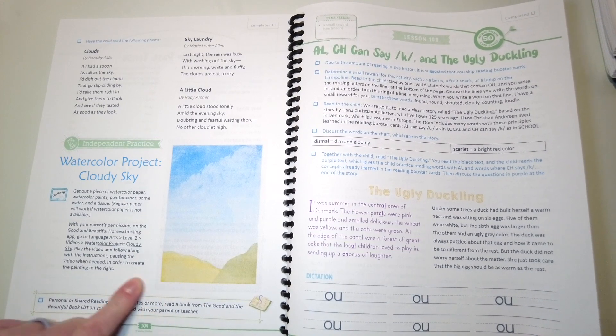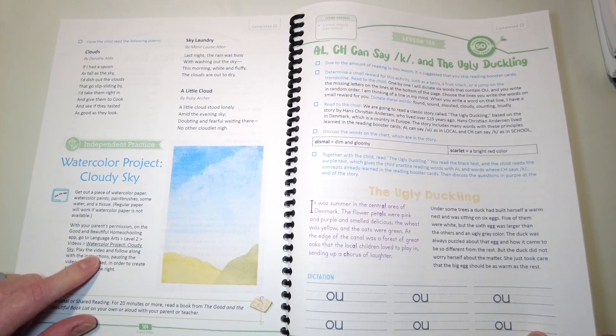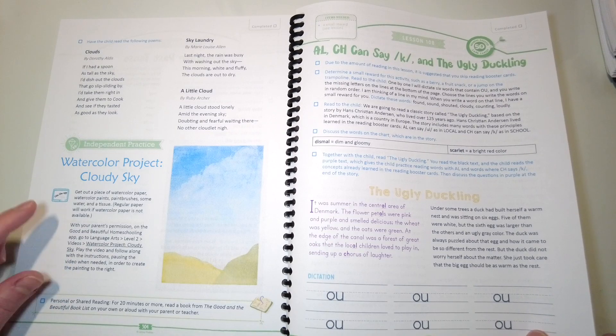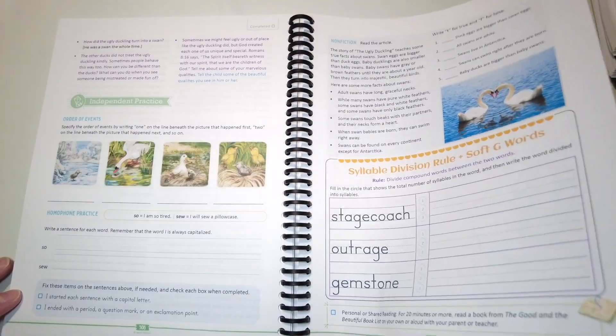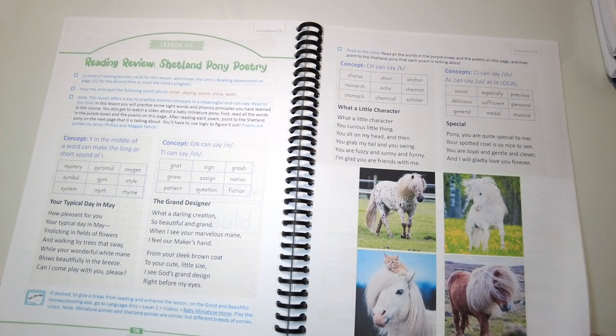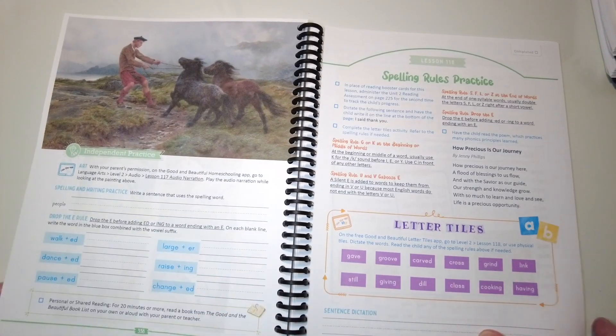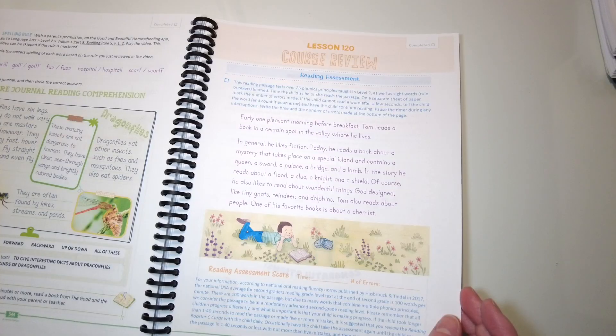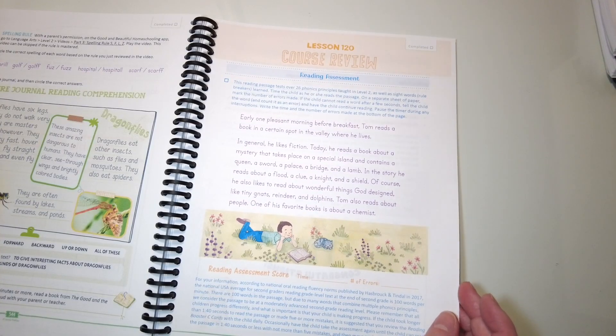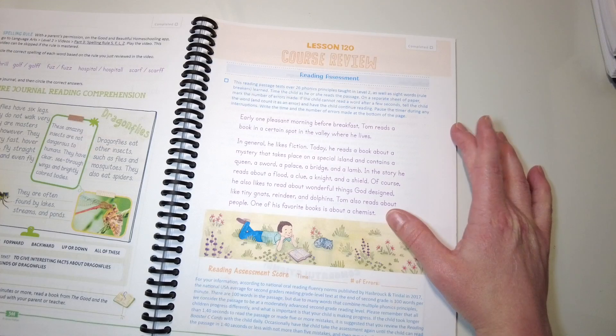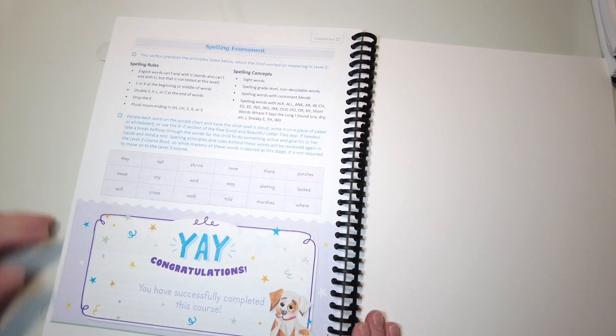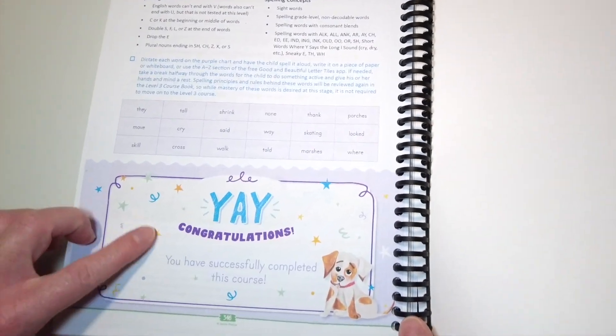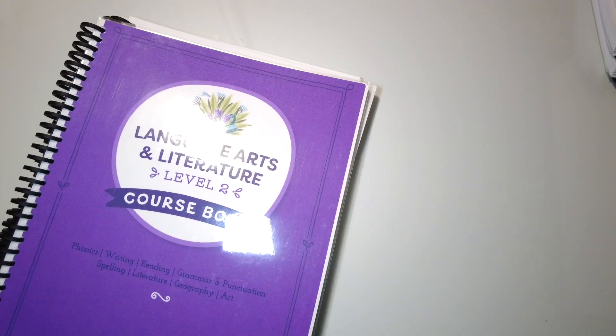So when there's a watercolor project, cloudy sky, we will do this together, and her sister will join in on the art project as well. And lesson 120, this is the course review. There's a reading assessment and the time and number of errors, and then the spelling assessment here as well.